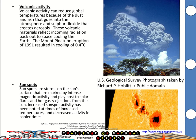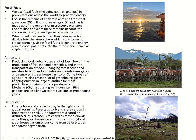Volcanoes can also reduce global temperatures, because the dust that goes into the atmosphere and sulfur dioxide create aerosols that reflect incoming solar radiation back out to space. The Mount Pinatubo eruption of 1991 caused cooling of 0.4 degrees Celsius. Sunspots are storms on the sun's surface marked by intense magnetic activity, and they host solar flares and hot gassy ejections. Increased sunspot activity has been noted during times of increased temperatures, and decreased activity during cooler times.